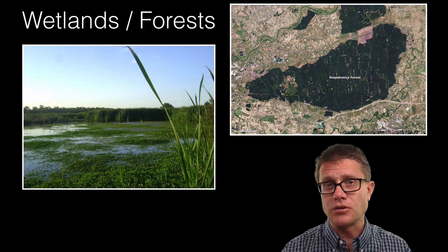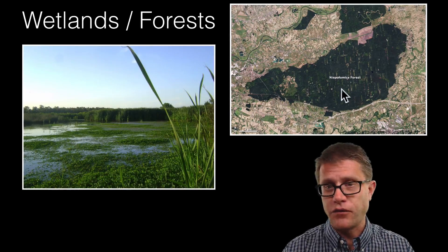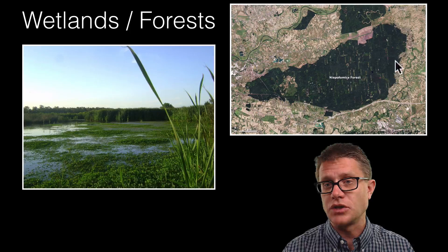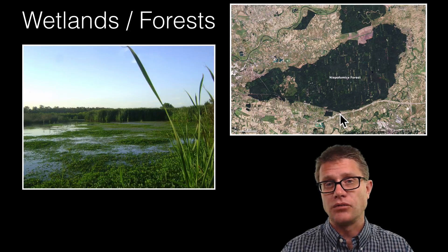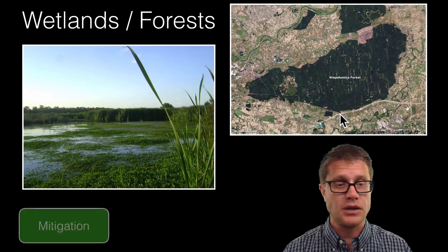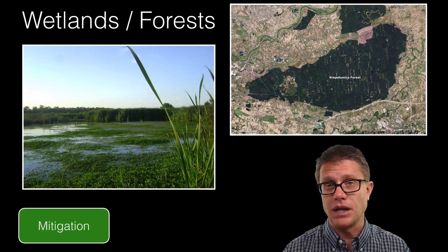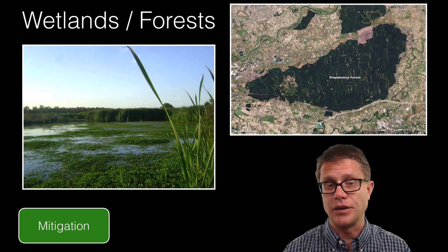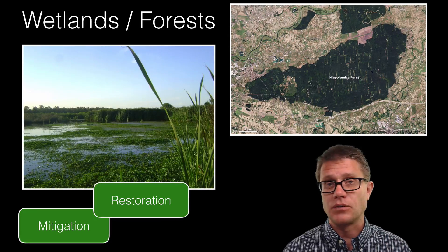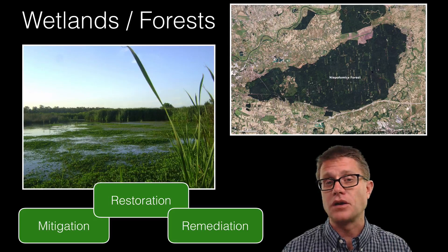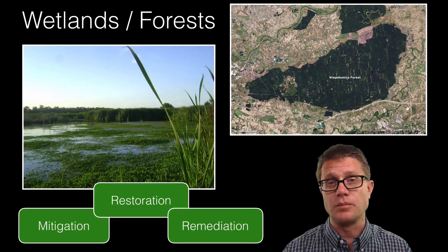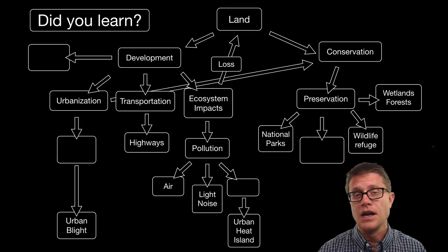On a micro scale we are also trying to protect wetlands around cities. This is a forest that has been protected in Poland since the 1300s. By putting boundaries around these areas we can mitigate development into these valuable areas, restore them when they are damaged, or remediate them. All of these are very big things that we can do around cities.